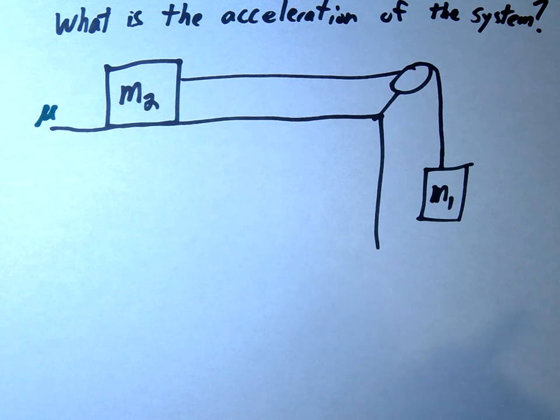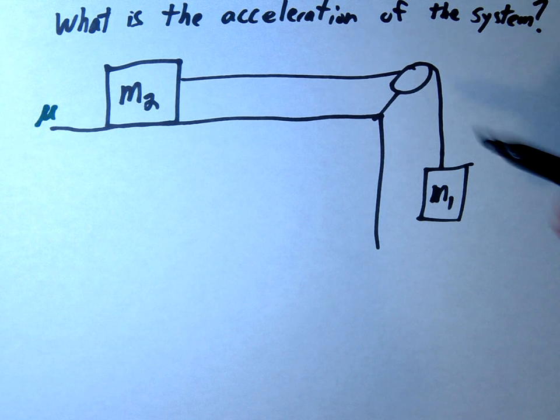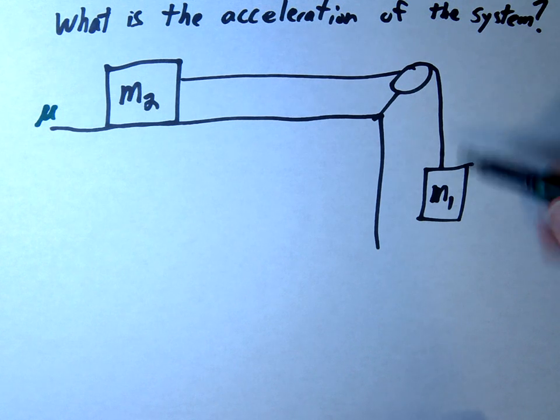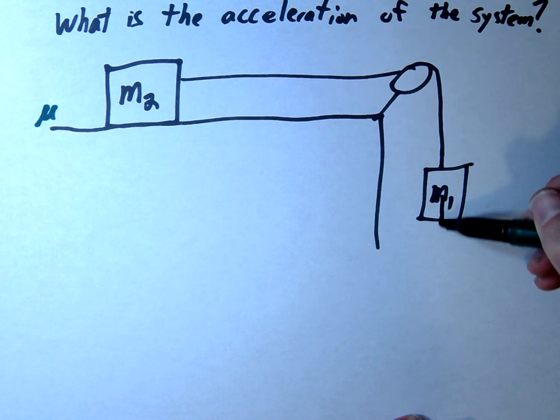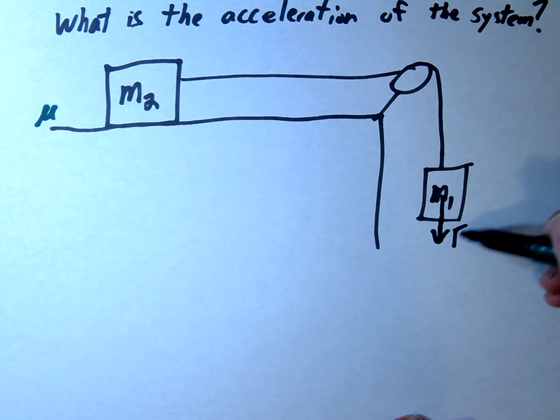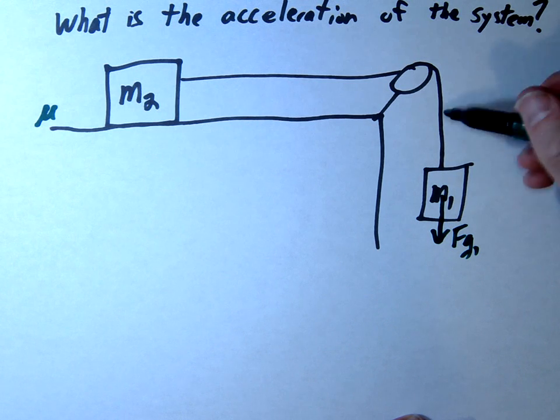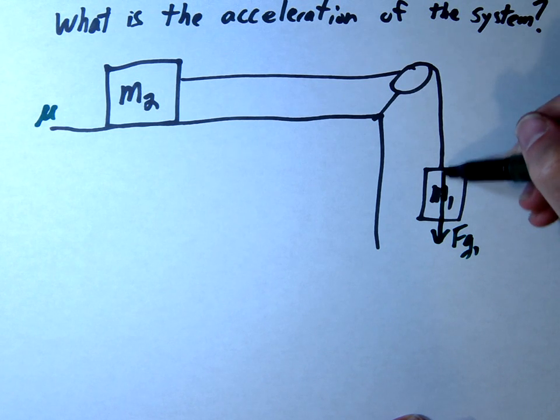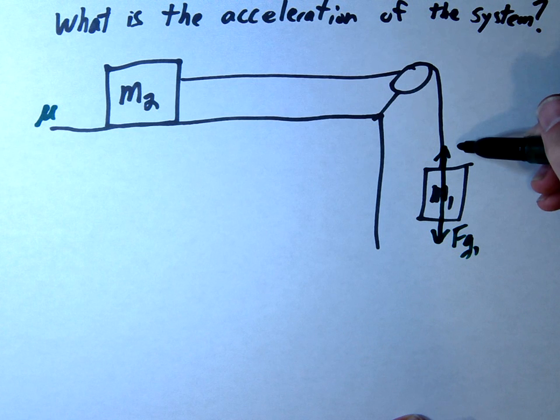The first thing we'll do is draw our free body diagram for each mass individually. The hanging mass has a force of gravity downward, which we'll call FG1, and tension in the string pulling up, which we'll call T.